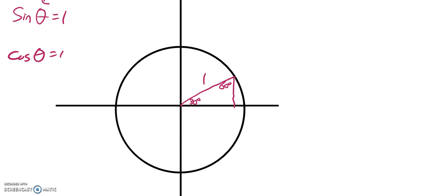I know that this side length, the side opposite the 30, is one half. And another side length that's opposite the 60 would be root 3 over 2.